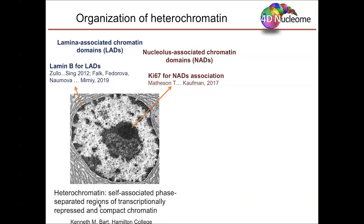Let me start with a brief introduction into NADs. We know that heterochromatic regions are self-associated, separated regions of inactive chromatin that localize in two major locations within cells: the nuclear periphery, shown in this micrograph in dark gray color, referred to as lamina-associated chromatin domains, and the nucleoli periphery — the dense area surrounding nucleoli in the center of the micrograph, termed NADs, or nucleolus-associated domains.